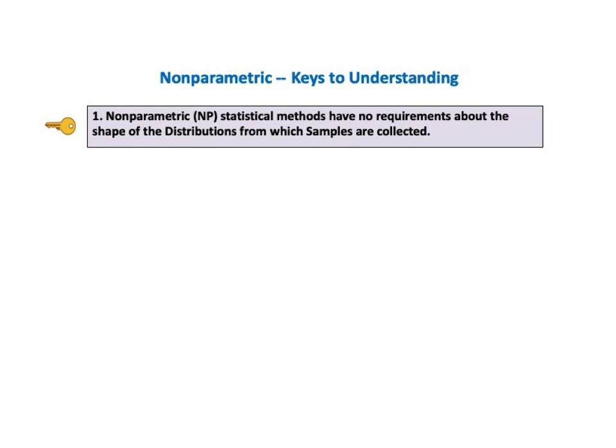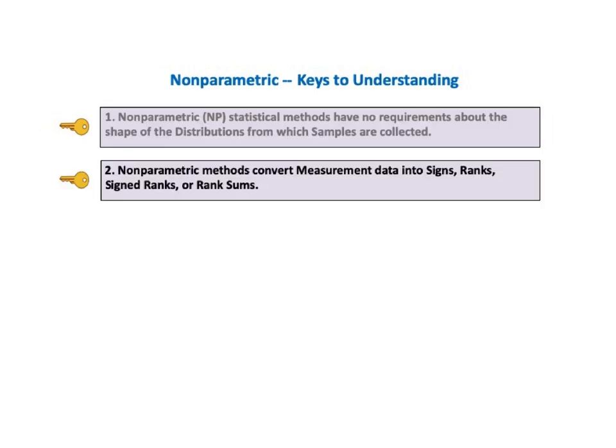The first key to understanding tells us that nonparametric, NP, statistical methods have no requirements about the shape of the distributions from which the samples are collected. The second KTU says nonparametric methods convert measurement data into signs, ranks, signed ranks, or rank sums.